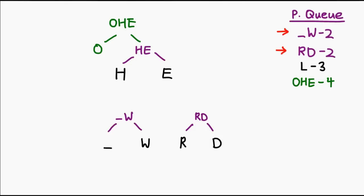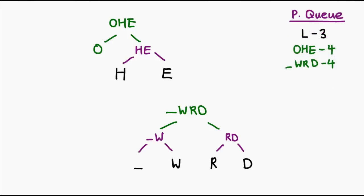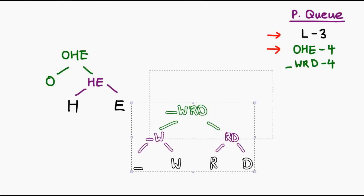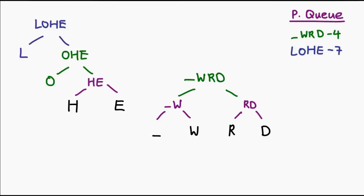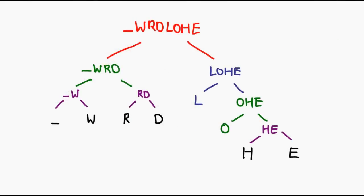In the next step, we combine space-W with RD. Since we already have both these trees, we combine them under a new symbol space-WRD with frequency 4. Next up, combine L with OHE, creating the symbol LOHE with a frequency of 7. And now we simply have two nodes left — we join them up in accordance to the priority queue, and this gives us the completed tree.